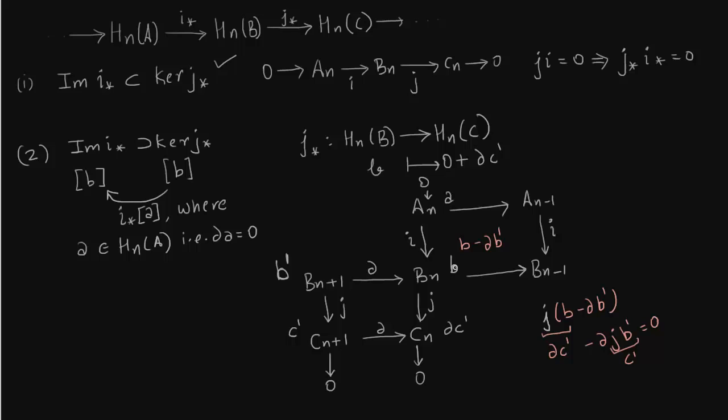And j(b') is δ, and j and δ commute. That's what we have done. And you see j(b') is c'. After all b' is the lift of c'. So ultimately we were able to find this element a in HnA.